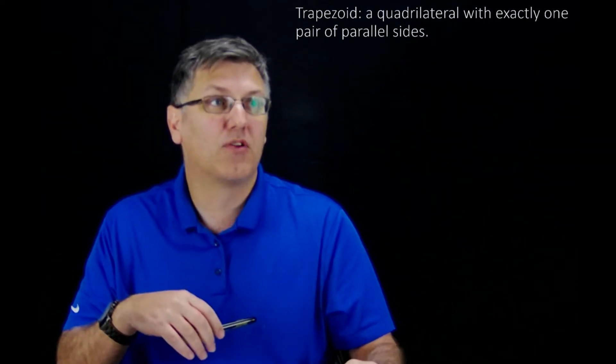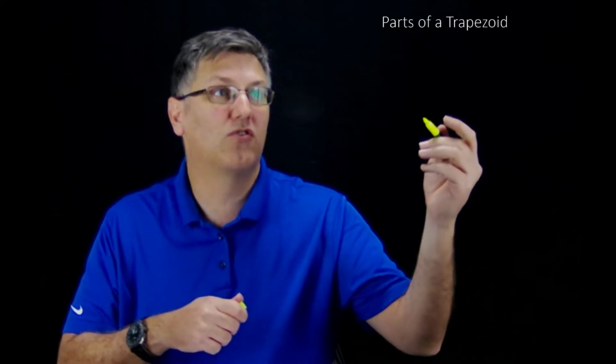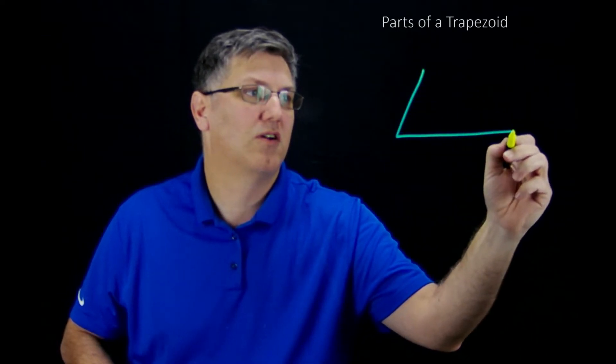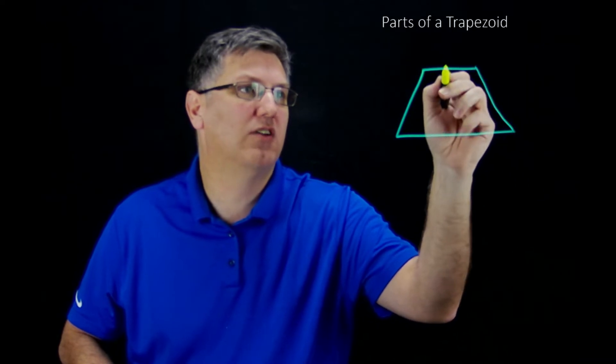Pretty straightforward, but the trapezoid itself does have some properties. Well, let's look at the parts first. So the parts of a trapezoid. Let me draw a trapezoid here. I'm going to have exactly one pair of parallel sides.